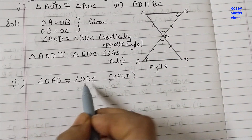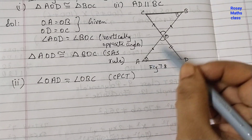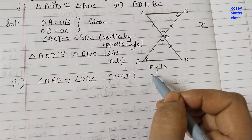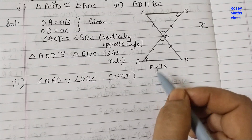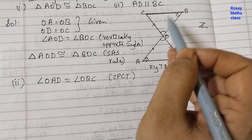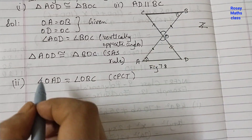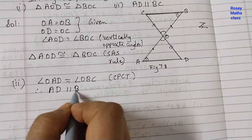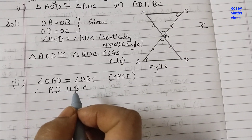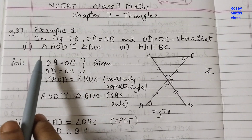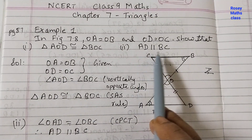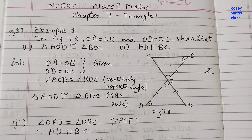These two angles are alternate interior angles — if you look, they form a Z-shape, like a Z. Alternate interior angles means AD is parallel to BC. Therefore AD is parallel to BC. So we have proved both parts: triangle AOD is congruent to triangle BOC, and also AD is parallel to BC. That's all for today, see you in the next video.